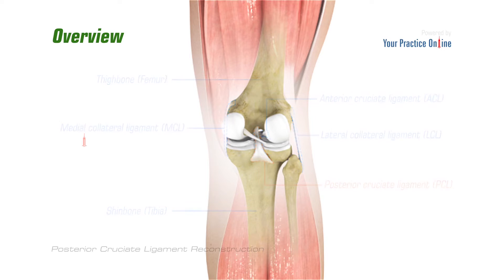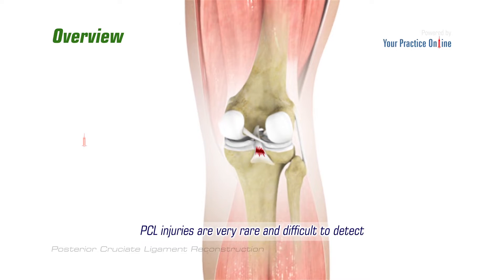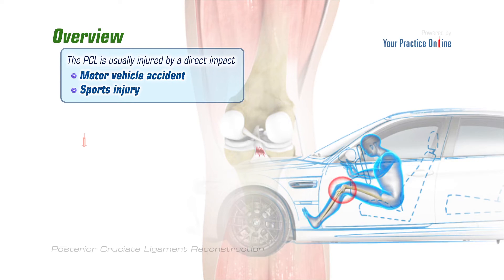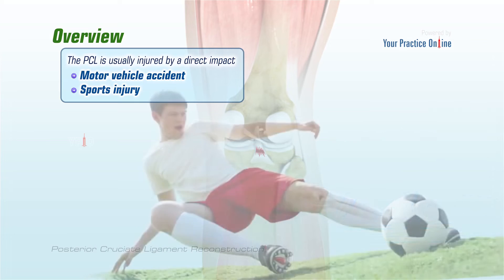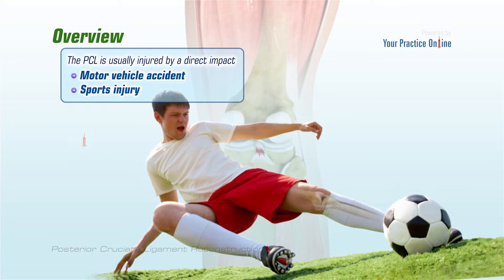PCL injuries are very rare and difficult to detect when compared to other knee ligament injuries. The posterior cruciate ligament is usually injured by a direct impact, such as a motor vehicle accident when the knee forcefully strikes against the dashboard, or during sports participation when a twisting injury or over-extension of the knee can also cause PCL injury.